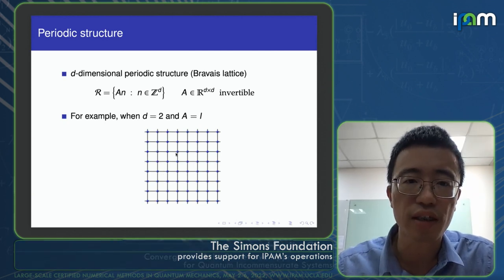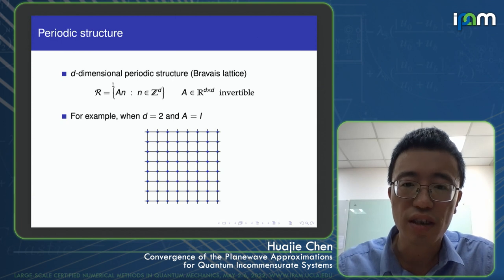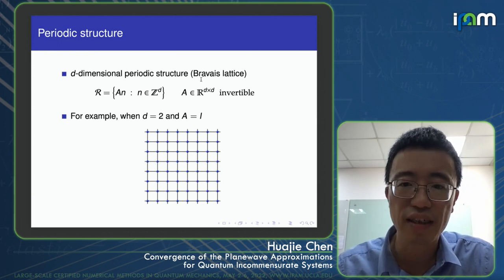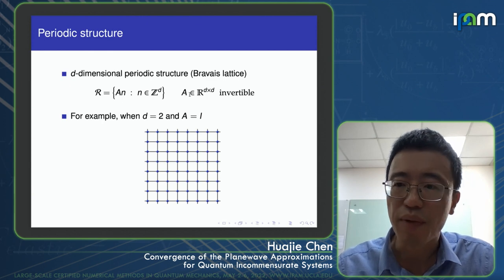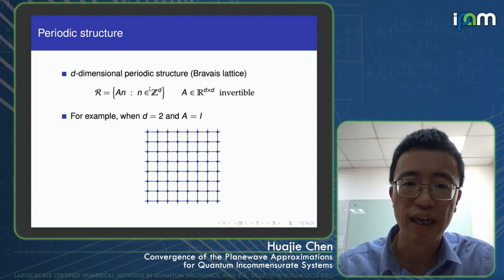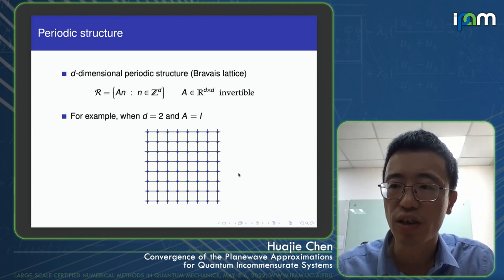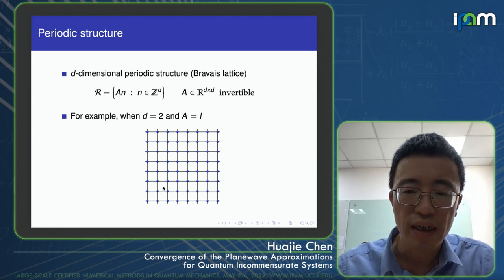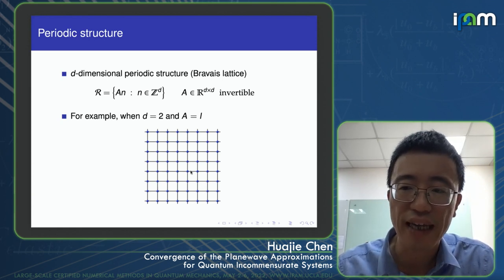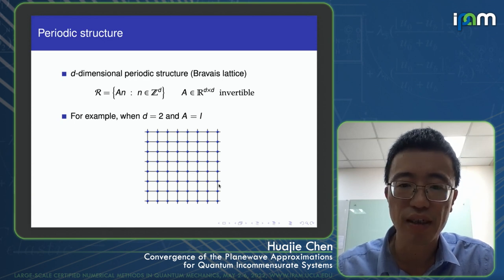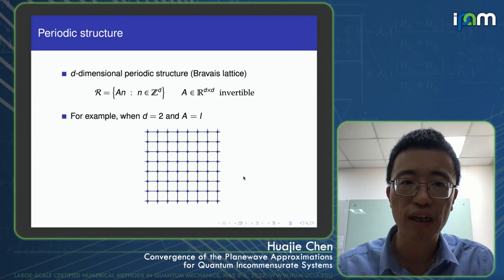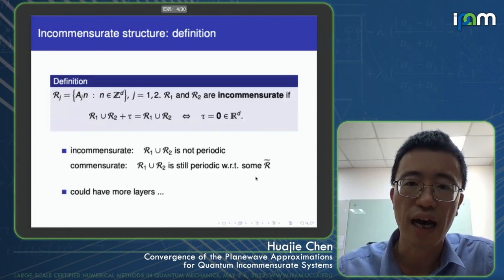Incommensurate structures come from periodic structures. In d-dimensions, the periodic structure, or the so-called Bravais lattice, is defined by a d-by-d invertible matrix times the integer points, giving a d-dimensional periodic lattice. For example, in two dimensions, if A is the two-by-two identity matrix, we have a square lattice. A key feature of the periodic structure is translation invariance: when we translate the system with respect to any lattice vector, we obtain exactly the same system.